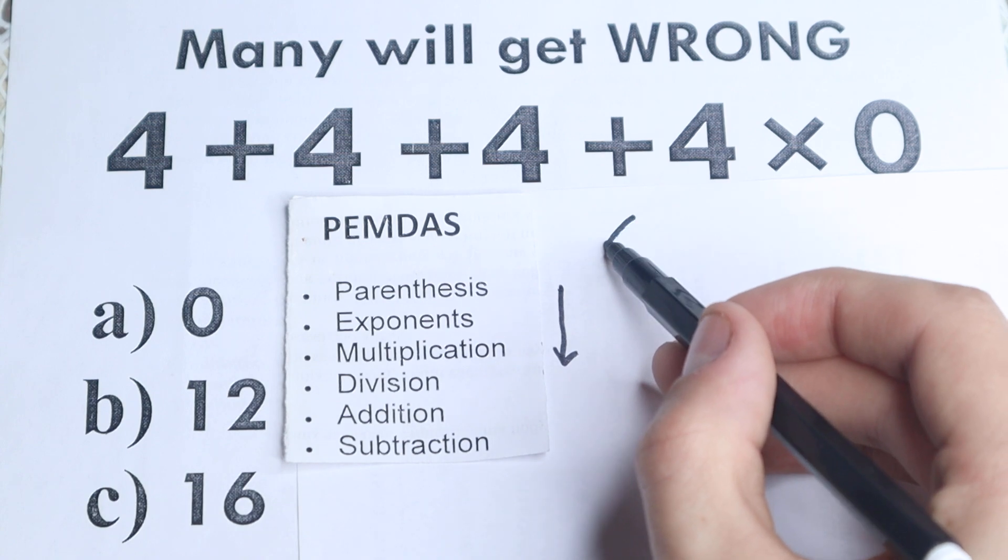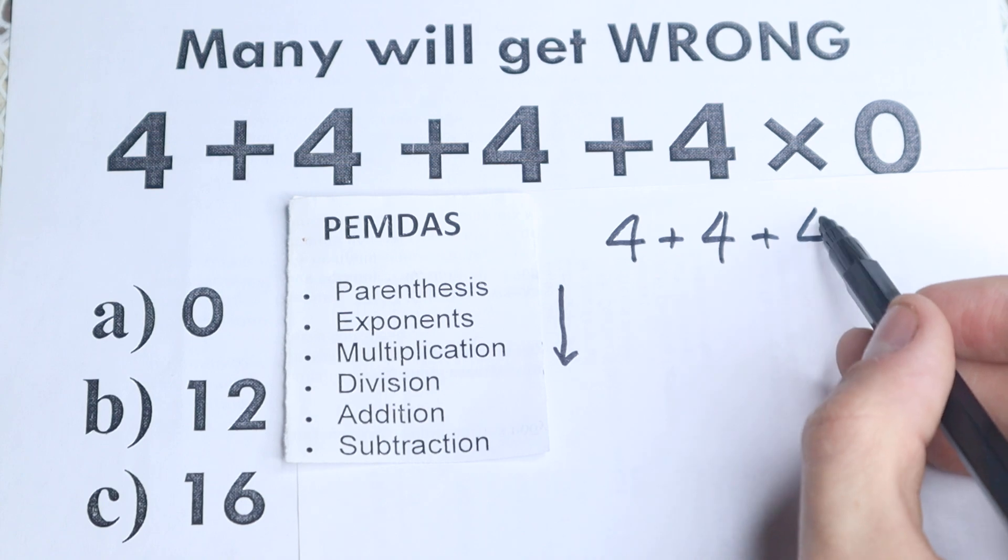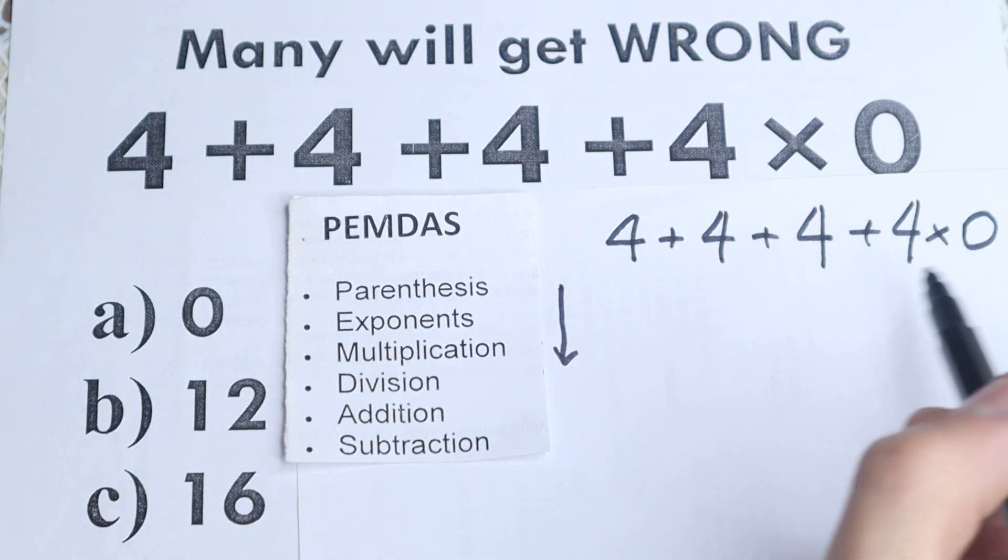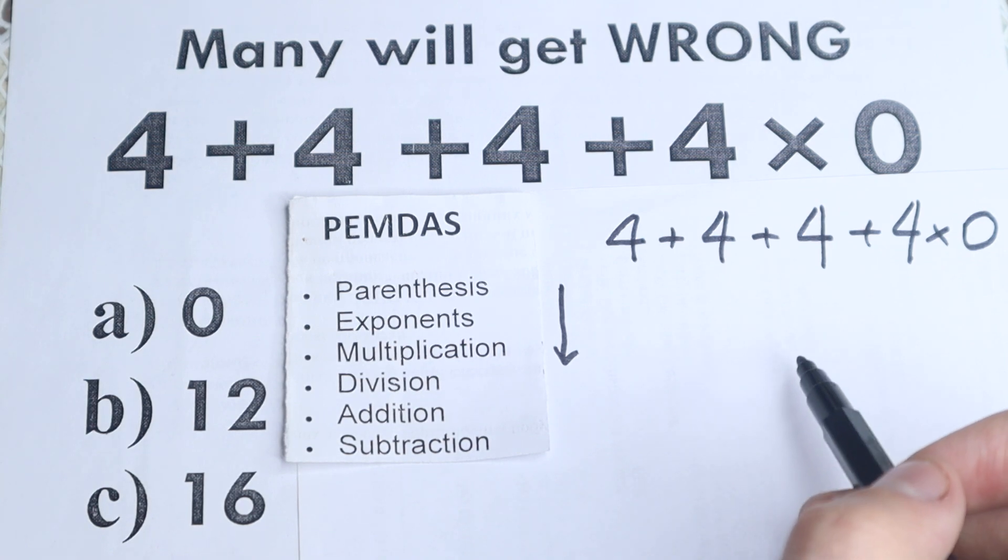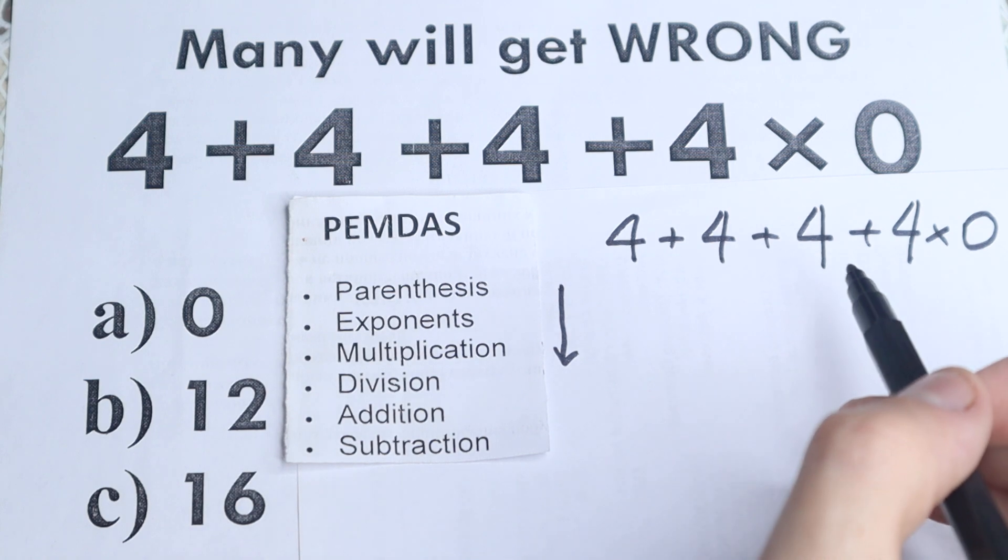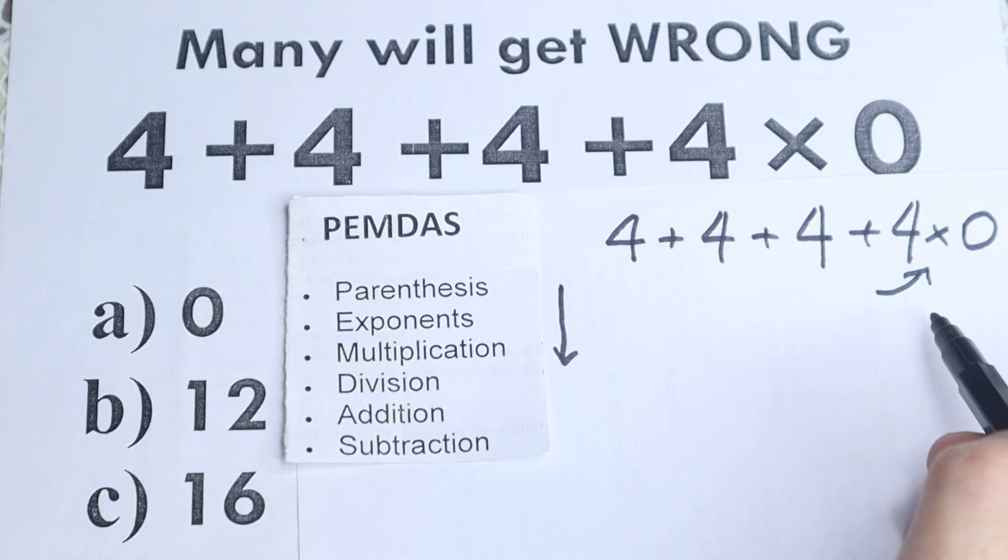So I just re-read this problem right here real quick. So 4 plus 4 plus 4 plus 4 times 0. So here is our problem right here, and this is our case, this is the multiplication case. And now we need to scan where is our multiplication sign. Multiplication sign is right here, in the end.